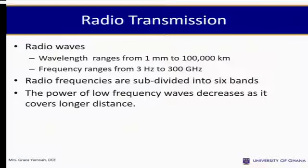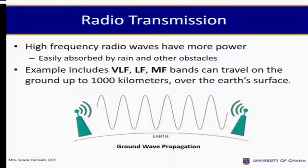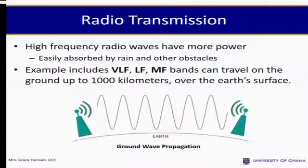Radio waves have wavelengths ranging from 1 mm to 100,000 km and frequencies ranging from 3 Hz to 300 GHz. Radio frequencies are subdivided into 6 bands. The power of low frequency waves decreases as it covers longer distances, while high frequency radio waves have more power but are easily absorbed by rain and other obstacles. Very low frequency, low frequency, and medium frequency bands can travel on the ground up to 1,000 km over the Earth's surface.